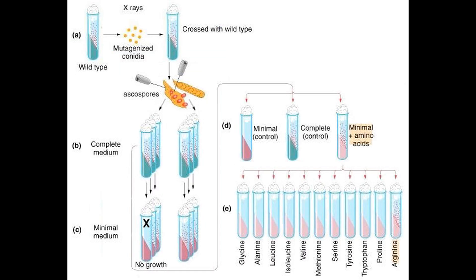The validation of Garrod's ideas came from the work of George Wells Beadle and Edward Tatum, who performed a series of mutational experiments in the 1940s using the common bread mold Neurospora crassa. The mutants they generated needed to be provided with the amino acid arginine in order to grow, unlike the wild type. This meant that the mutations broke one or more enzymes specific for the biosynthesis of arginine. The results led Beadle and Tatum to propose that specific genes code for specific enzymes — the one gene, one enzyme hypothesis.